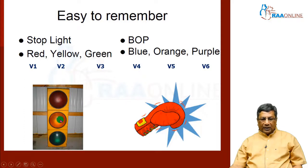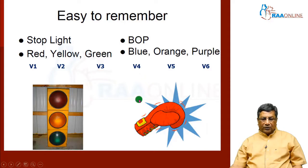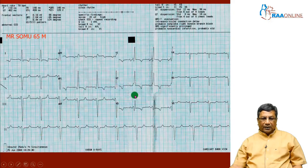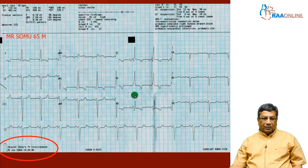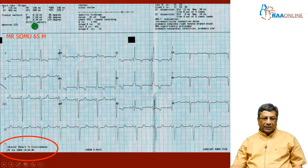For V1 and V2, remember the traffic signal. For V3, place it between V2 and V4. For V4, V5, and V6, remember the mnemonic BOP. All ECGs must have the clinical details of the patient — age and sex.